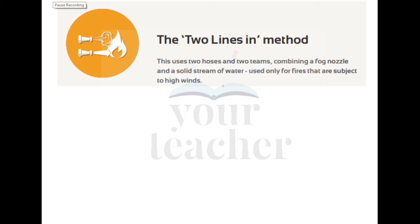So far we have discussed four firefighting techniques: fog attack, indirect attack, direct attack, and combination attack. The fifth technique is the two lines-in method. While combination attack equals direct attack plus indirect attack, the two lines-in method equals direct attack plus fog attack. It uses two hoses and two teams: one team engaged in direct attack and the other controlling the spreading of fire, combining a fork nozzle and a solid stream of water.